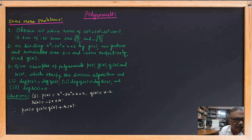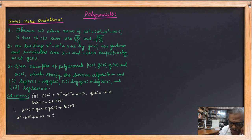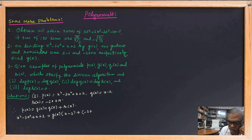Therefore, x cubed minus 3x squared plus x plus 2 is equal to g(x) multiplied by the quotient x minus 2, plus the remainder minus 2x plus 4.